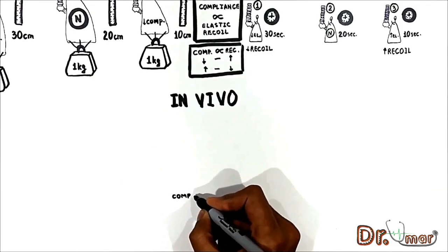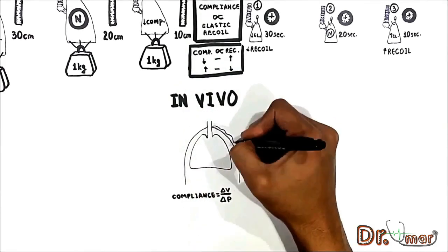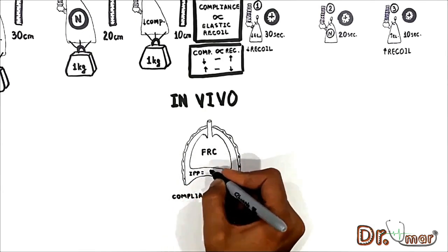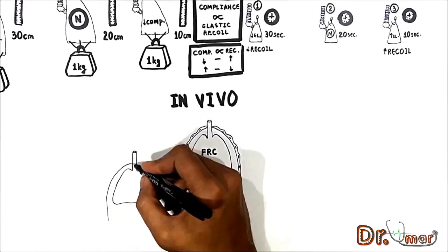Lung compliance is the change in lung volume divided by the change in surrounding pressure. At FRC — before inspiration begins — the intrapleural pressure is negative 5 cm water. To overcome the recoil force and expand the lung so air can flow in, you must make intrapleural pressure even more negative. Negative intrapleural pressure is the force that expands the lung, analogous to the weight in our in vitro experiment. Compliance is thus an index of the effort required to expand the lungs and overcome recoil.